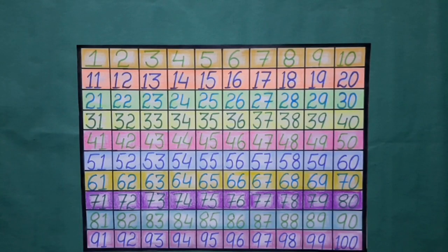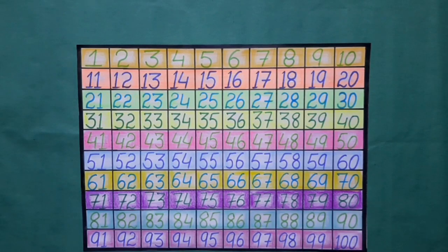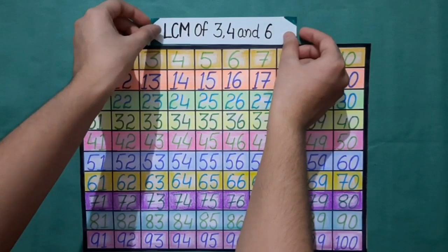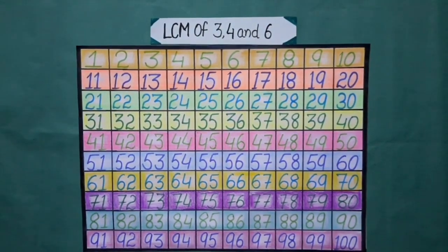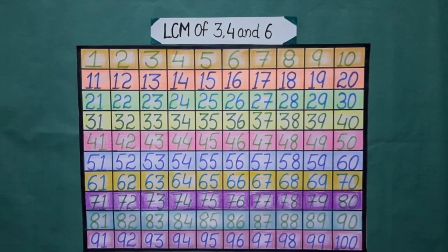Here I have numbers 1 to 100 written on this board. Let us find out LCM of 3, 4 and 6 by play way method. To find the LCM, first of all, we will recite table of 3 and will put the purple bindis on the multiples of 3.